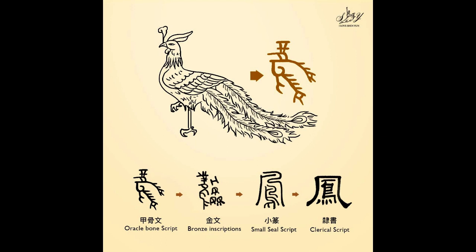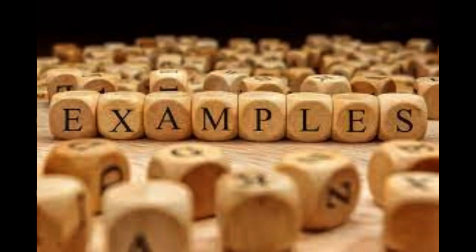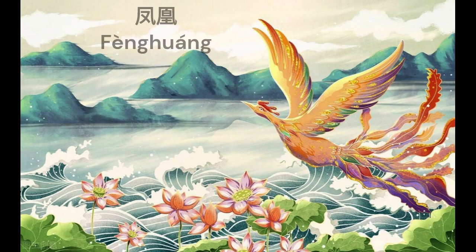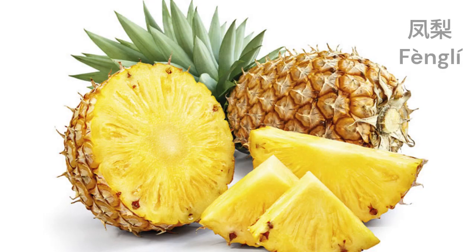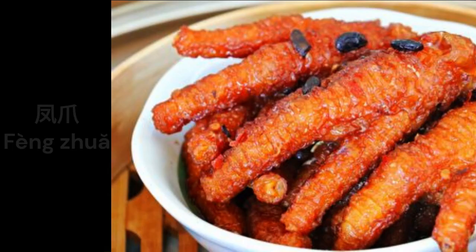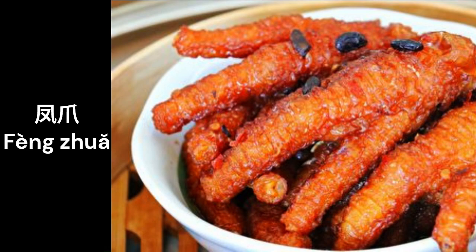This makes it easier to learn. Now let's see some examples: fènghuáng — phoenix; fèng bō — pineapple; fèng jiǎo — chicken feet, a Chinese delicacy.